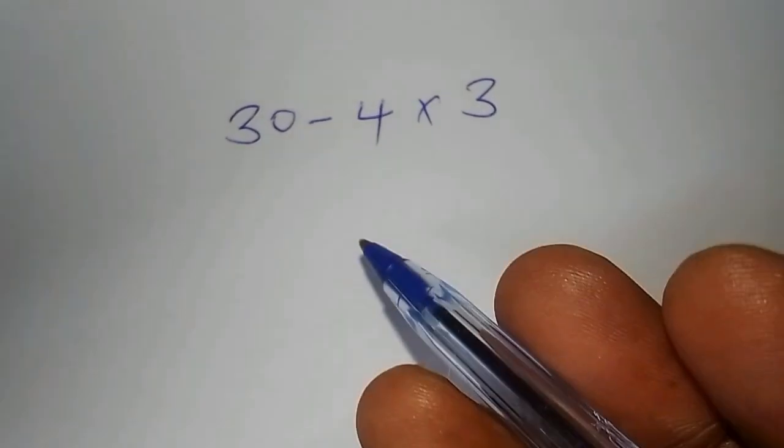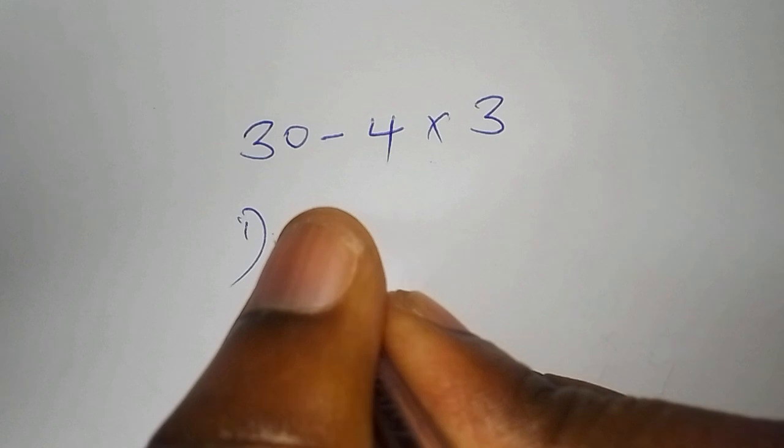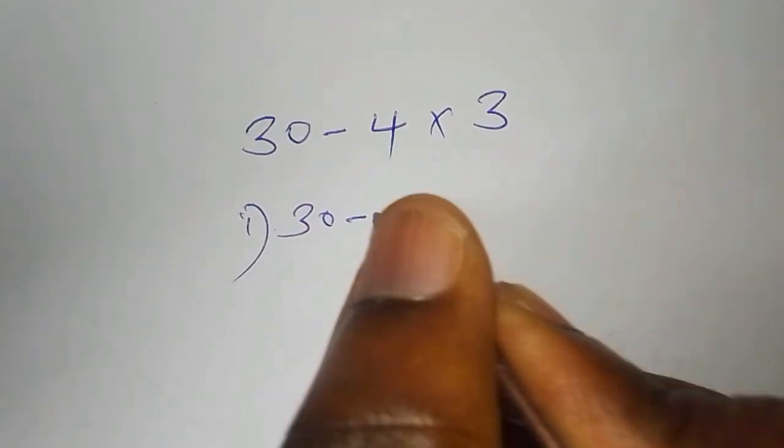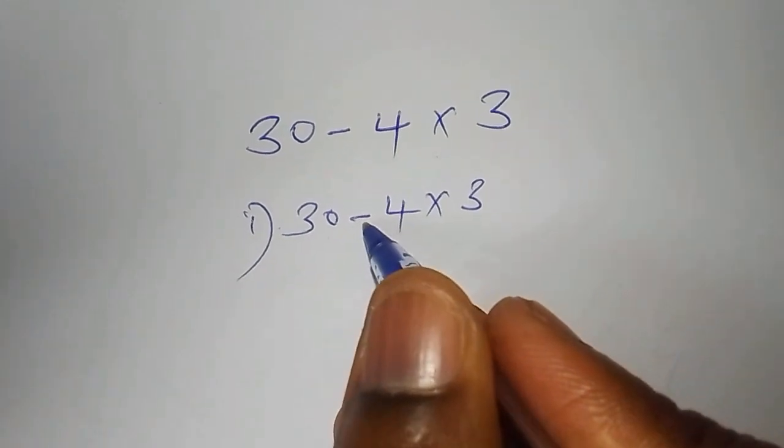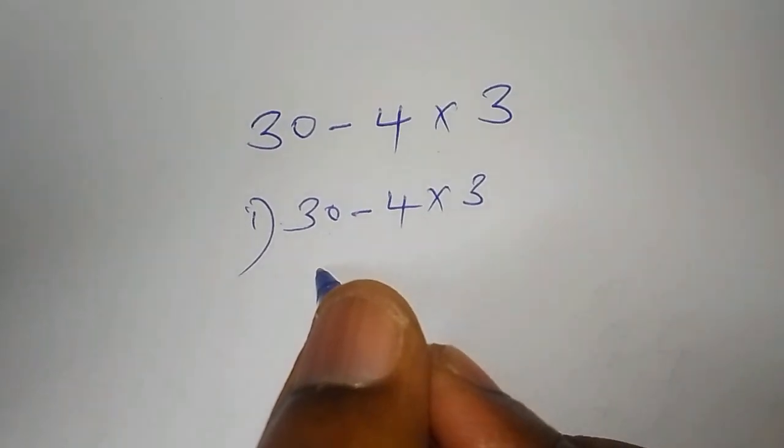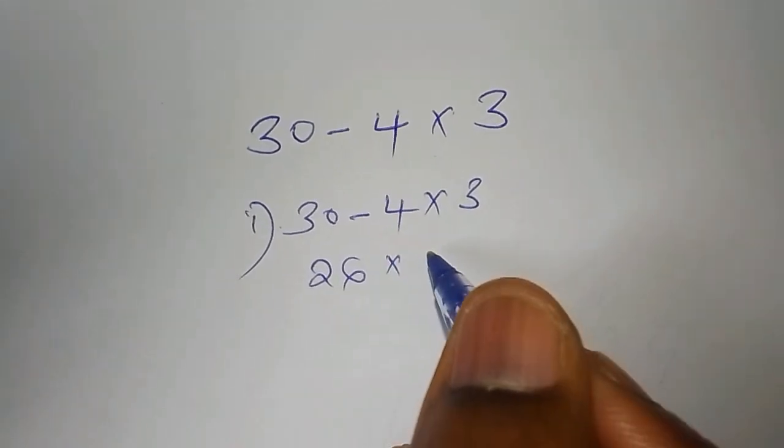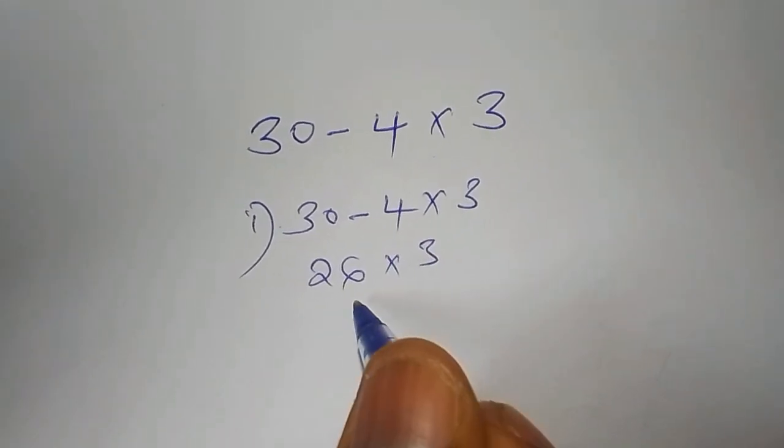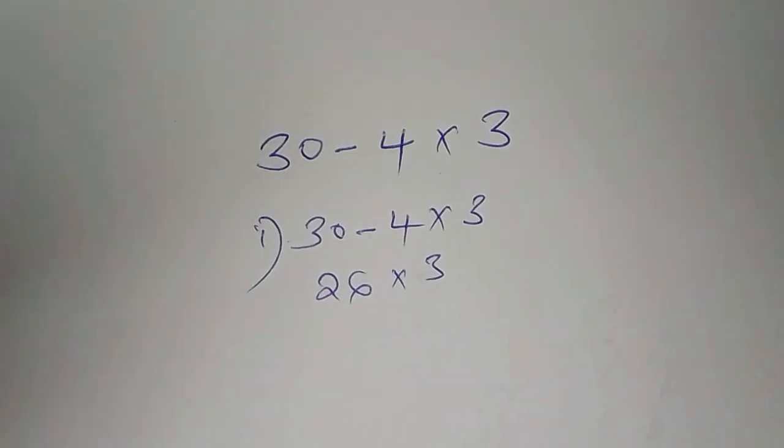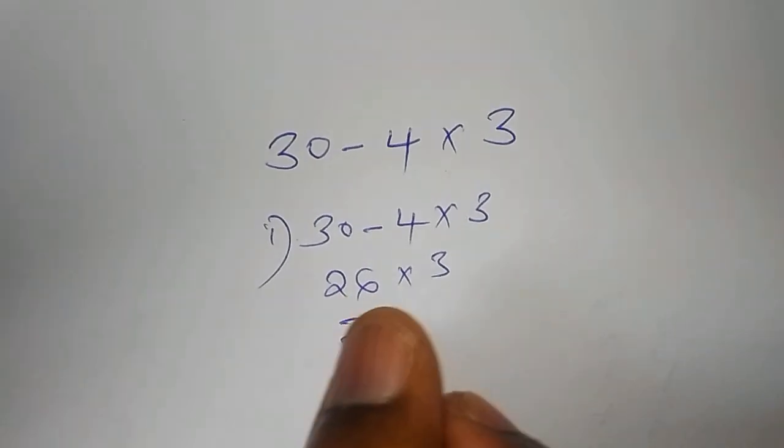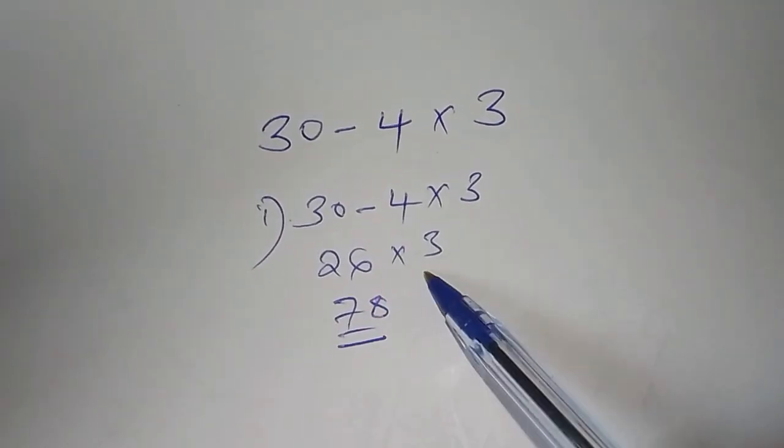A lot of students usually do it this way, and they say that the first attempt they pick 30 subtract from 4 multiplied by 3. Then they say 30 subtract from 4 is 26. Then they pick 26 multiplied by 3. So when you calculate 26 multiplied by 3, we shall get our answer as 78. So they work it out and say the answer is 78.